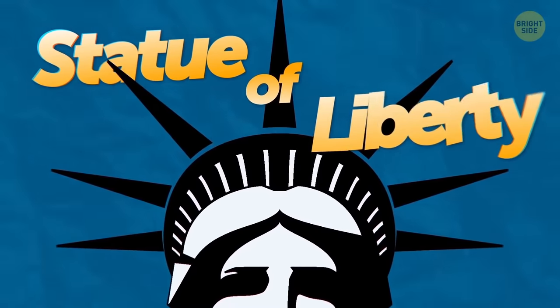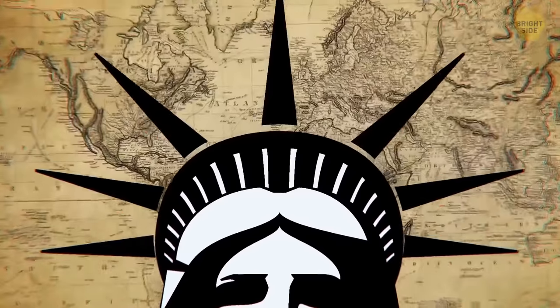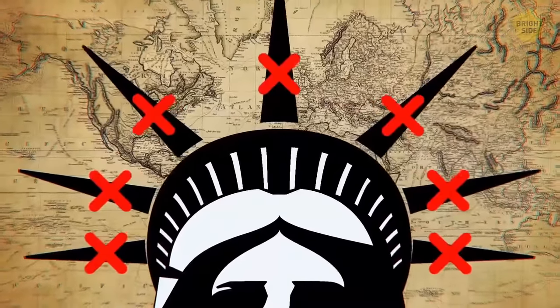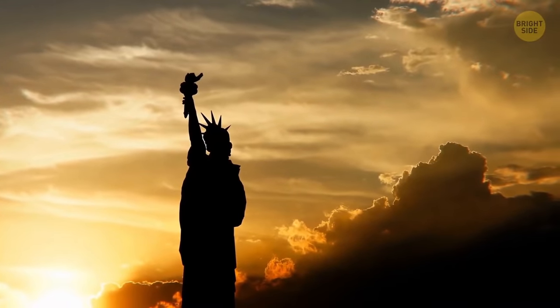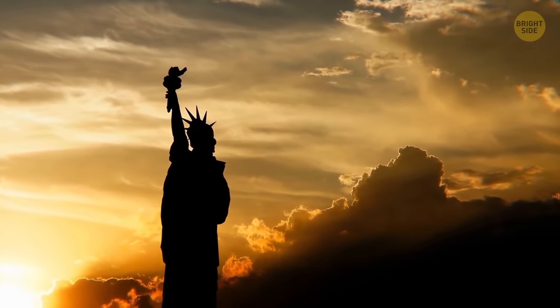The seven spikes on top of the Statue of Liberty's crown don't represent the seven seas and the seven continents at all. They're representing the sun's rays, giving a halo to show that she is divine.